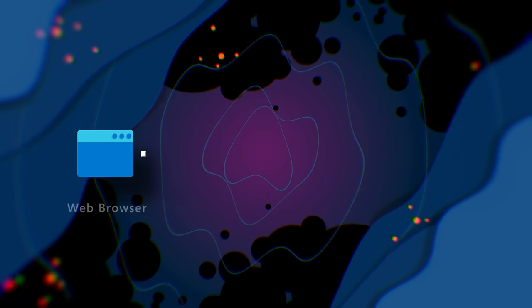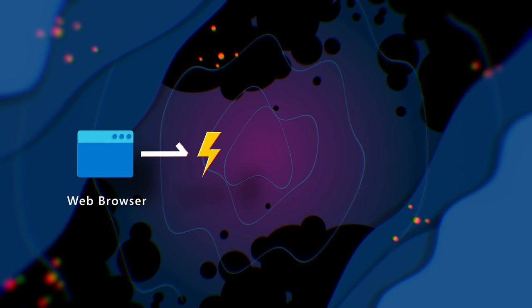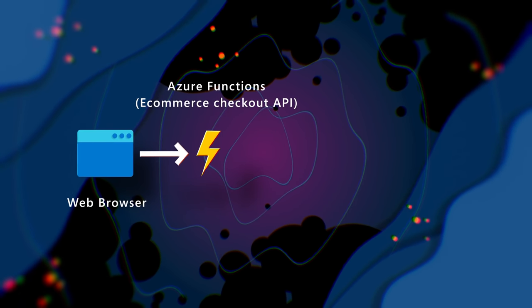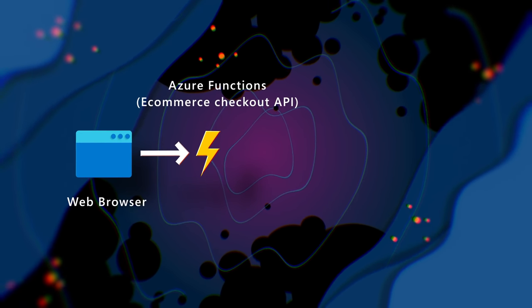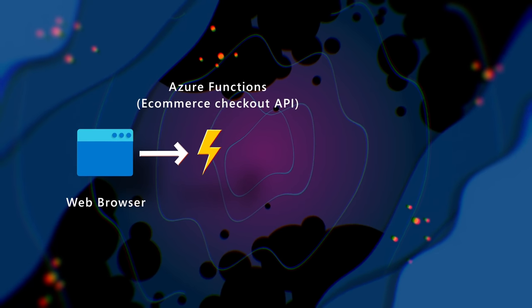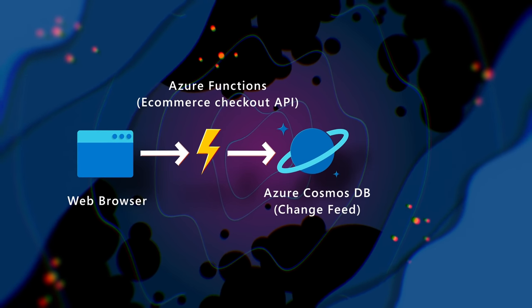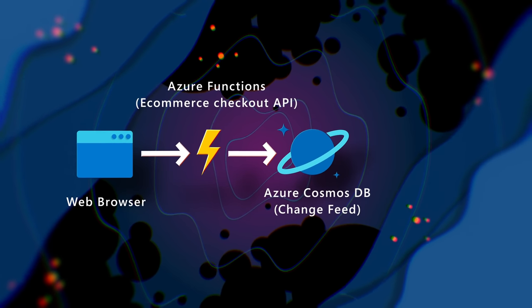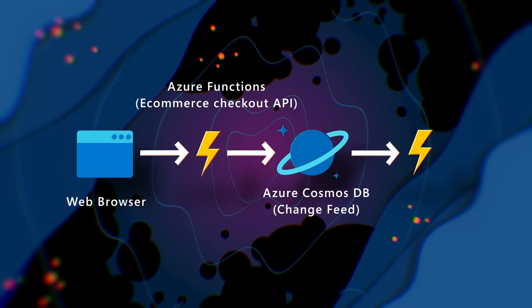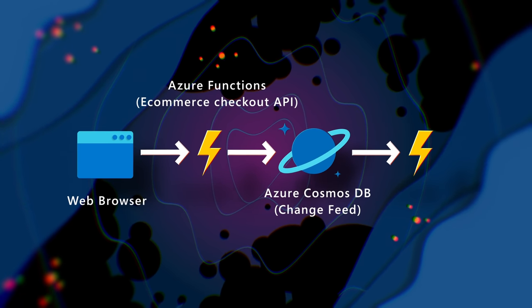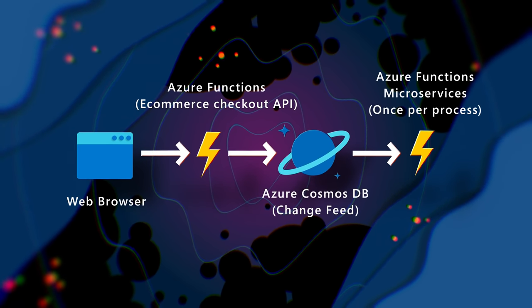First we're going to have our user-facing web app, and we might use Azure Functions to implement an endpoint for the purchase action in our shopping cart using an HTTP trigger — that's what we see on the left here. From there we'd have a Cosmos DB trigger monitoring that container for the new order. Then Azure Functions gets notified of the new order and executes some code for each event that we want to initiate.